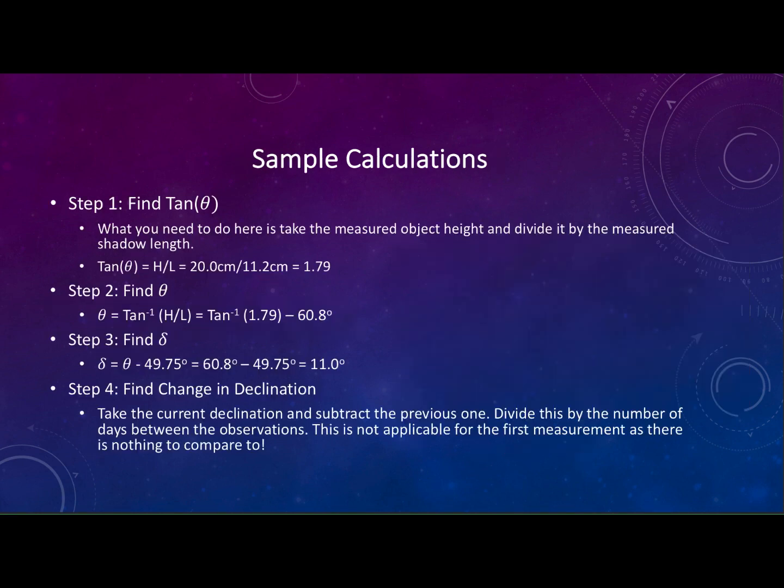Let me give you a sample calculation here. For this one we're going to look at the first data point. The very first thing we want to do is to find the tangent of theta. What you do is you take the object height that you've measured and divide it by the measured shadow length. In my case my object is 20 centimeters every time and the shadow length for the first observation was 11.2 centimeters. If you divide those two the units cancel. In this case it would be 1.79 and that is what you would put in the data table.